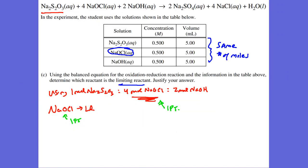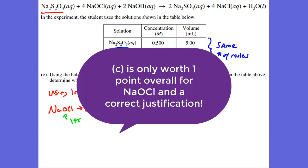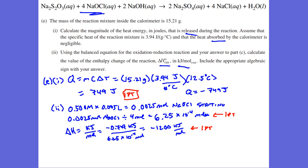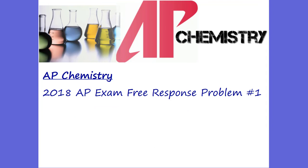Quick point review: A is worth one point, B is two points, C is two points, D is one point, E1 is one point, E2 is two points, F is one point, and G is one point — totaling ten points. Hopefully that helped. That was the 2018 AP Chemistry exam question number one. Make sure you put your AP Chem test score in on MrAden.com so I can take a look. I'll catch you on the next video. See you, bye.